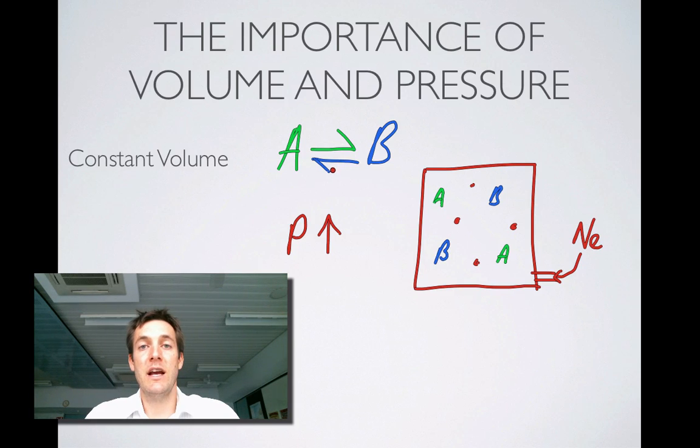Now, if the rate of these two reactions can't change, then this equilibrium isn't going to shift. So in other words, if I add noble gases at constant volume, they don't affect equilibrium systems because they don't affect the actual number of particles that react per unit volume.